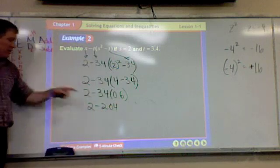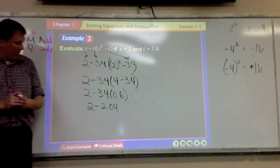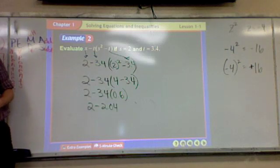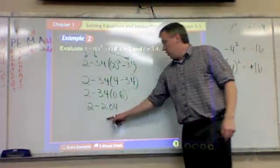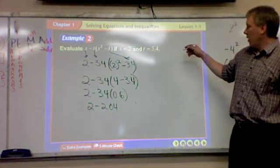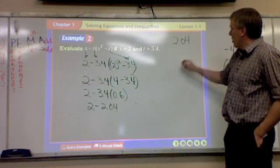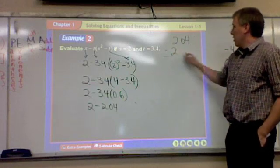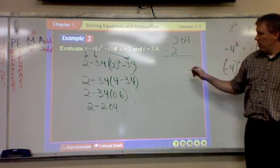Because it's still minus, right? Minus 3.4 times 0.6. Now, for some of you, you have these kind of things down and it's really easy for you. Some of you really need to think backwards. What would be the answer to this problem? If I got rid of the 2s, what's left? 0.4.